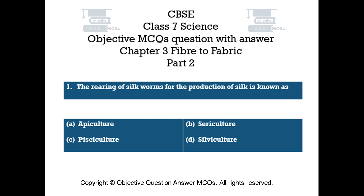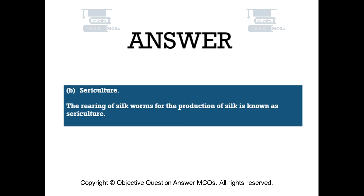Question number 1. The rearing of silkworms for the production of silk is known as. Option A: Apiculture. Option B: Sericulture. Option C: Pisiculture. Option D: Silviculture. The right answer is Option B — Sericulture. The rearing of silkworms for the production of silk is known as sericulture.